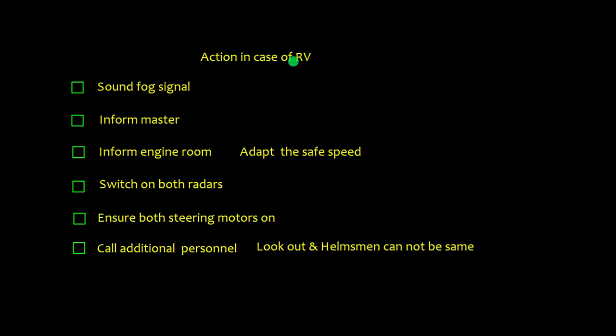Actions to take in restricted visibility: sound the fog signal, inform the master, inform the engine room, and adapt to safe speed. Note that slow speed is not always safe speed — if you reduce speed too much, you may not be able to steer. Switch on both radars, ensure both steering motors are on, and call additional personnel. The lookout and helmsman cannot be the same person, so post an extra lookout.